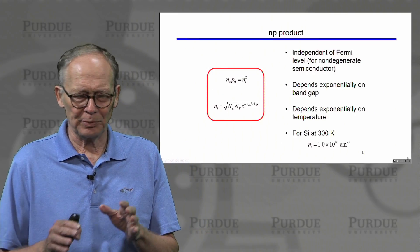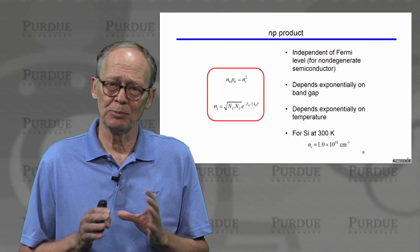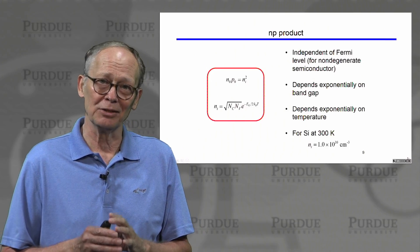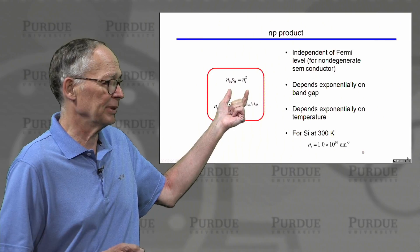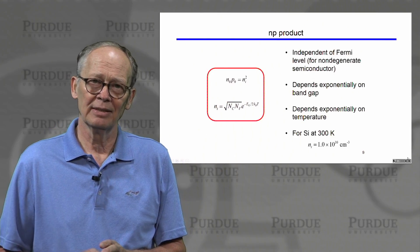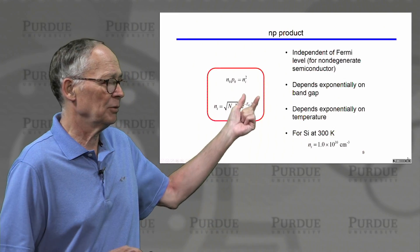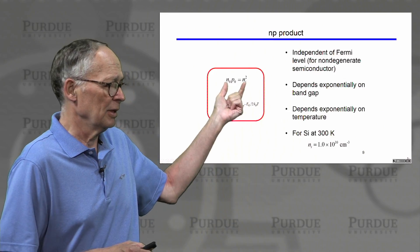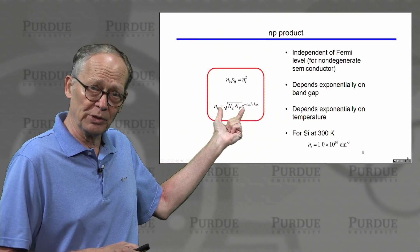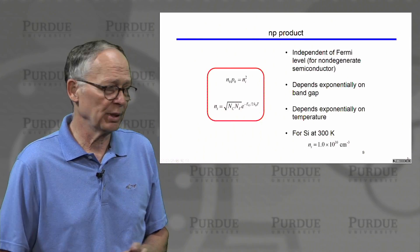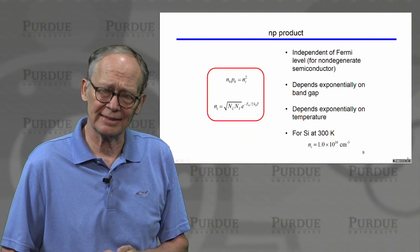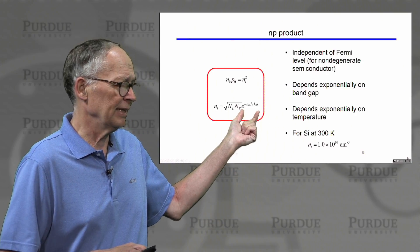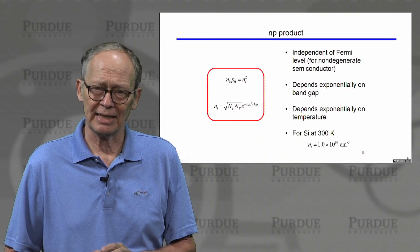Having developed these expressions for electron and hole concentration, we multiplied the two together to get the NP product. This is an important quantity used frequently in semiconductors. What we found is that it is independent of the location of the Fermi level — NP equals ni squared — assuming a non-degenerate semiconductor. When we evaluated this expression, we got a formula for the intrinsic carrier concentration squared. It depends on the product of the two effective densities of states, so the effective masses come in, and very importantly it depends exponentially on the band gap and on the temperature.